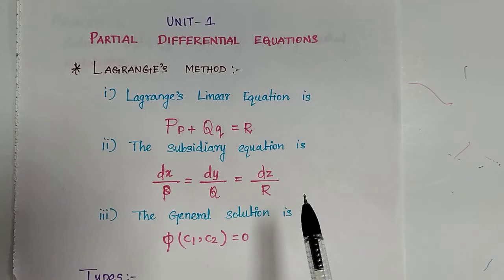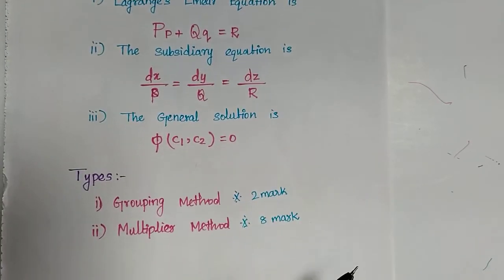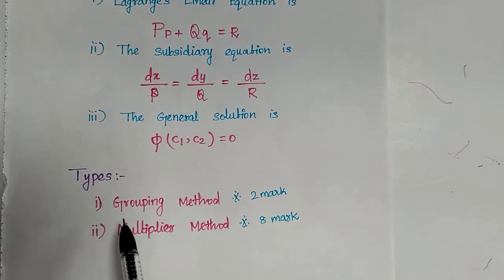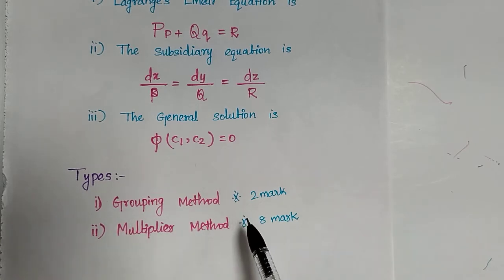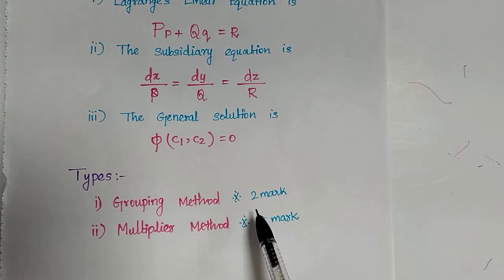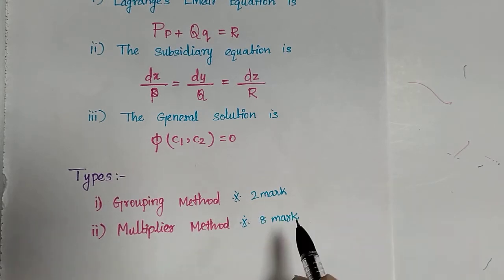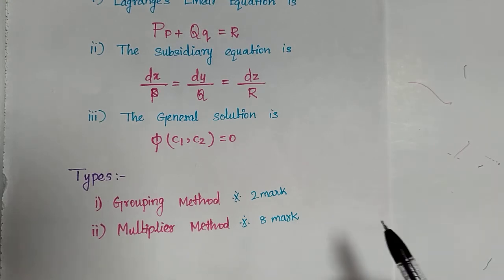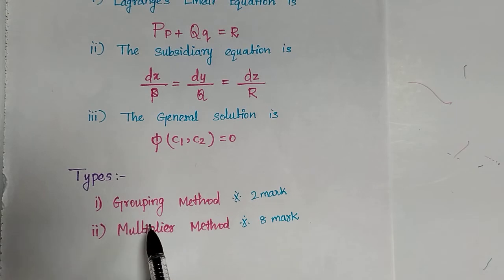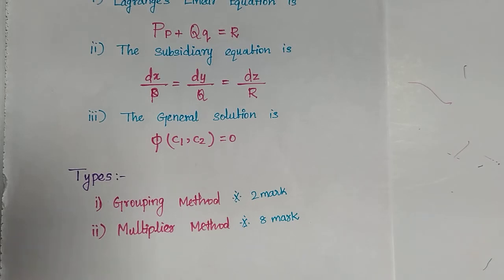After finding c1 and c2, we write the general solution as phi of (c1, c2) equals 0. In Lagrange's equation we have two types: the first is the grouping method, and the second is the multiplier method. The grouping method is mostly asked in 2-mark questions, while the multiplier method will definitely give you one 8-mark question.